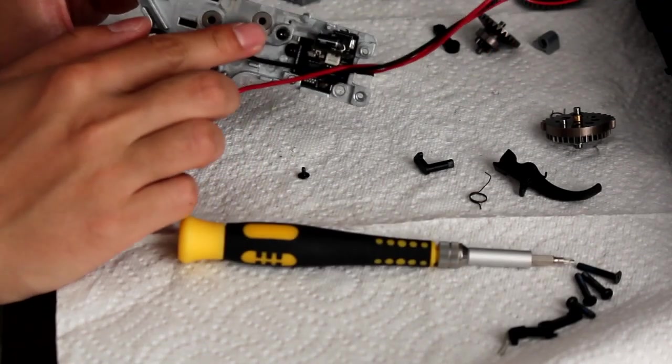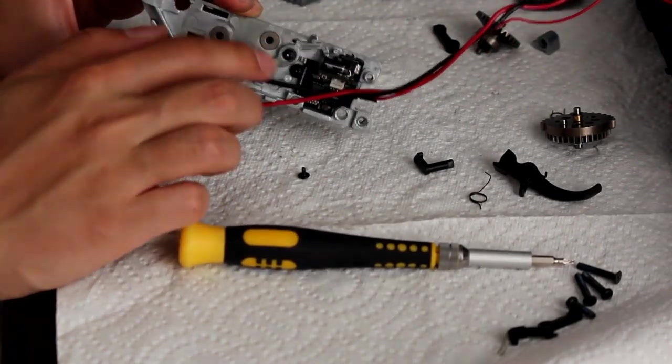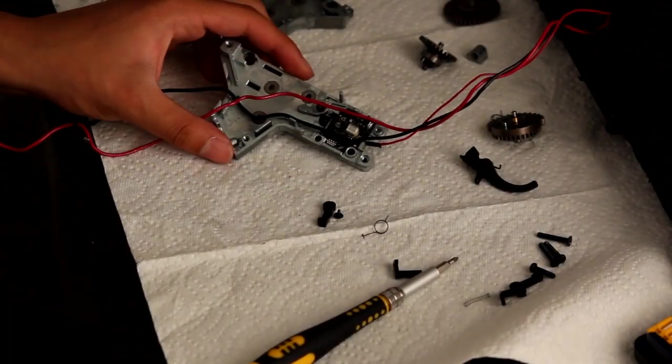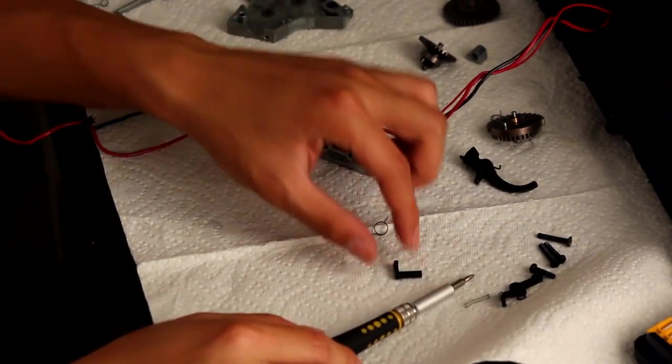And this is what your gearbox should look like now, this should be able to move up and down by the way. Okay, so next we're going to do the safety lever.